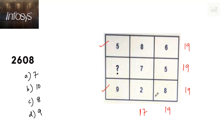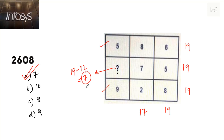Column total for two of the columns is the same at 19. If I make the second row total also 19, then 7 plus 5 is 12, and the missing number should be 19 minus 12 equals 7. Yes, that is in option A. That means 7 fits in at this place.